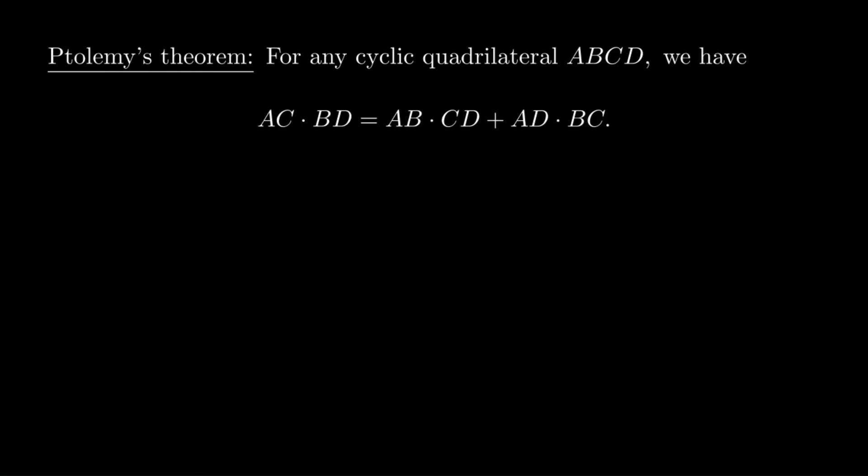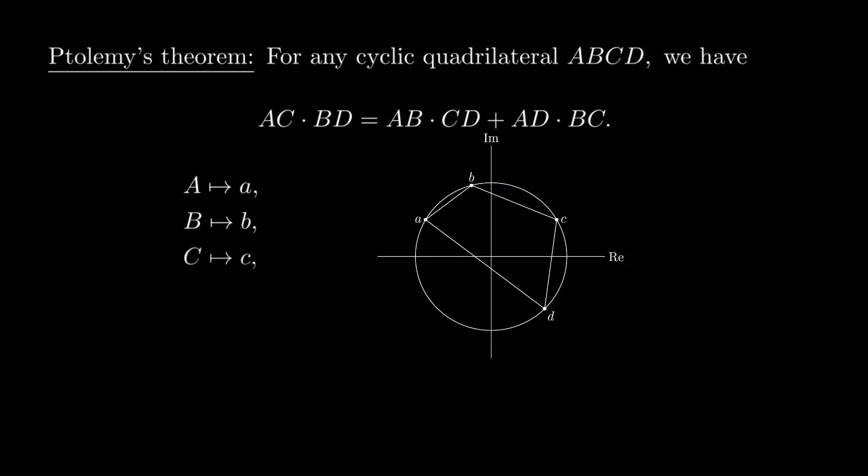First we put the whole diagram in the complex plane, and we'll represent each point with a complex number. A corresponds to the complex number lowercase a, and so on. Since we can rescale a picture without changing anything, we might as well assume that this is the unit circle, so it's centered at the origin, and these four complex numbers have absolute value one.